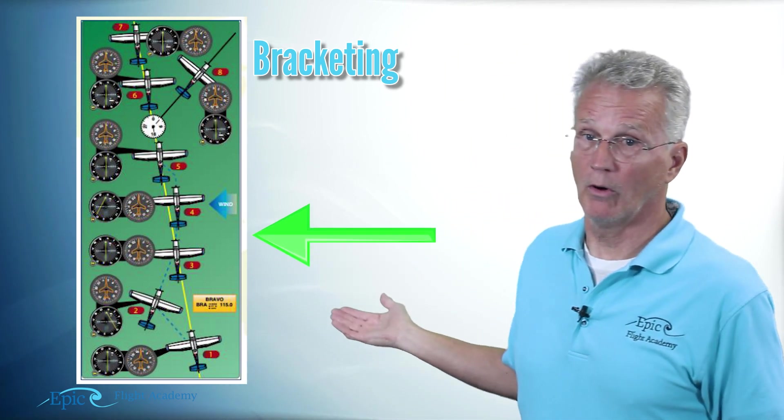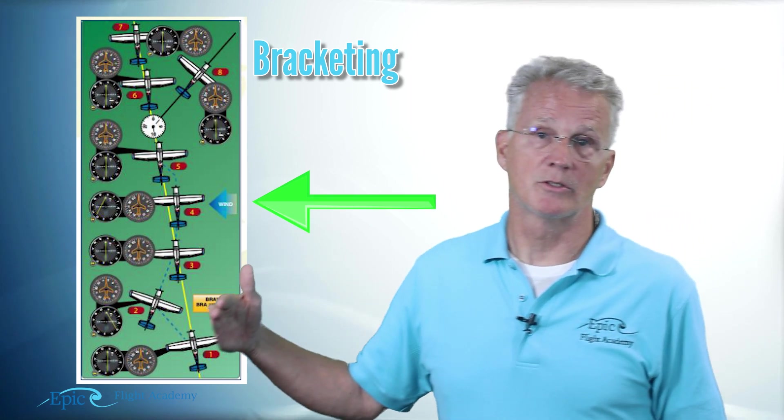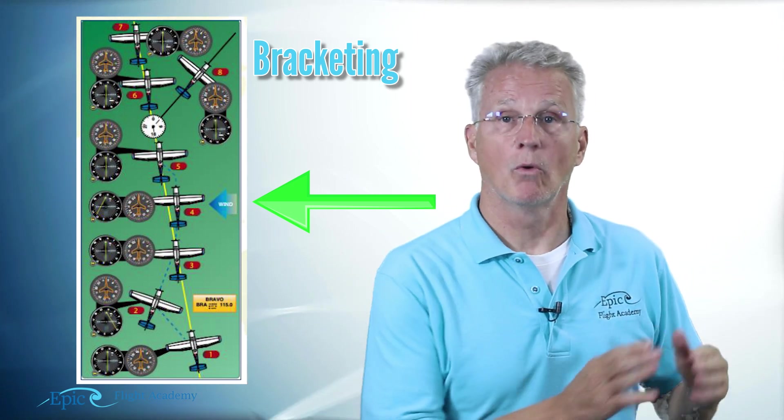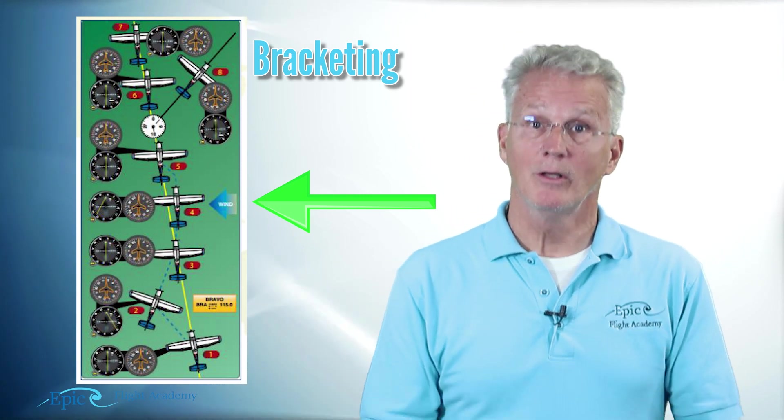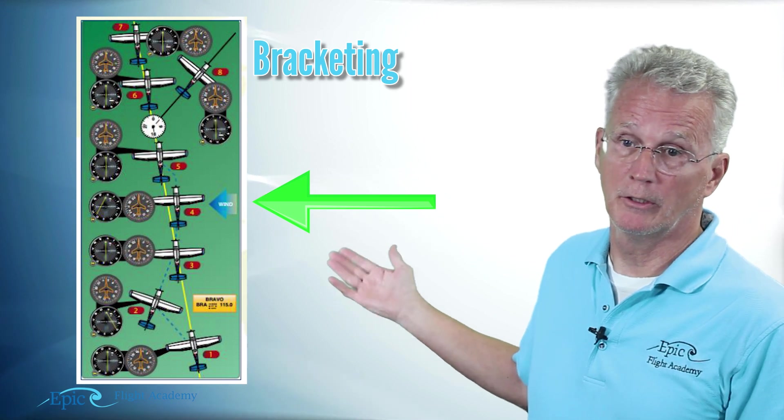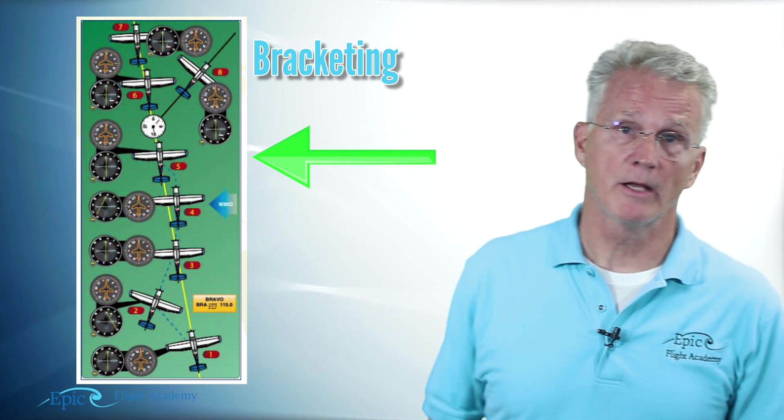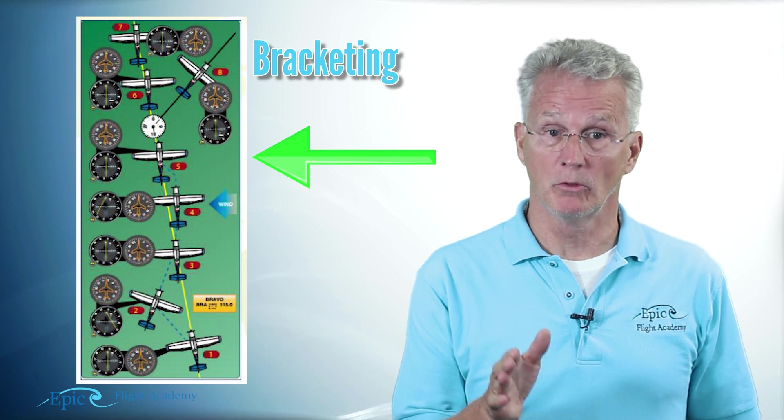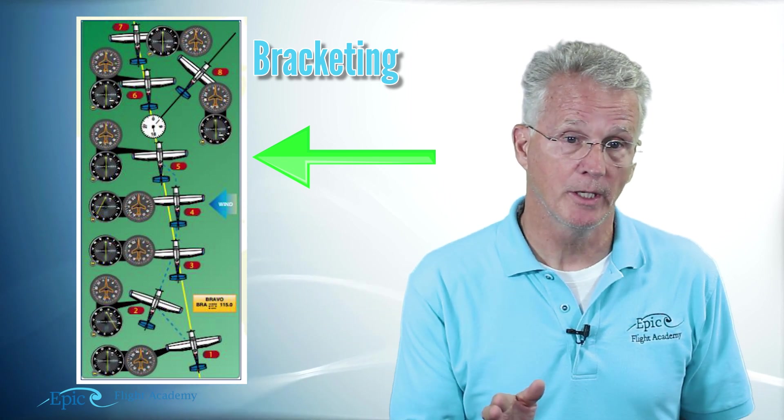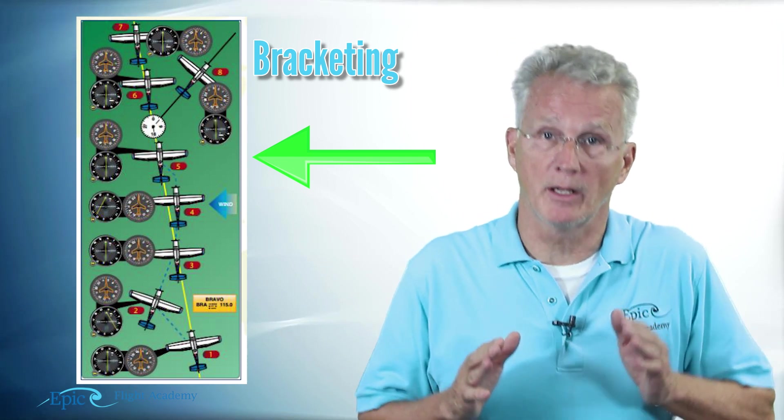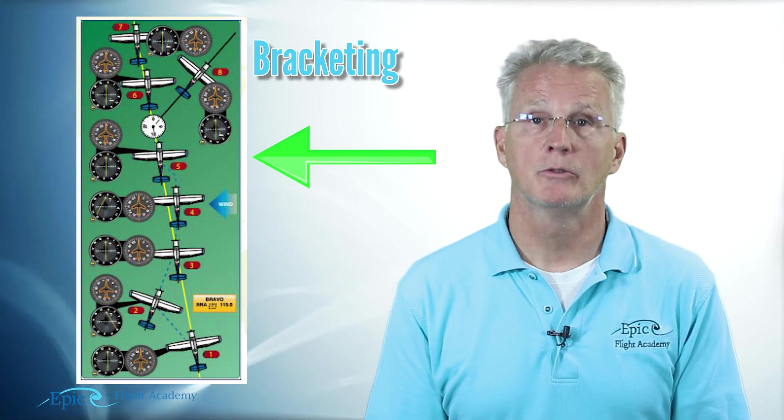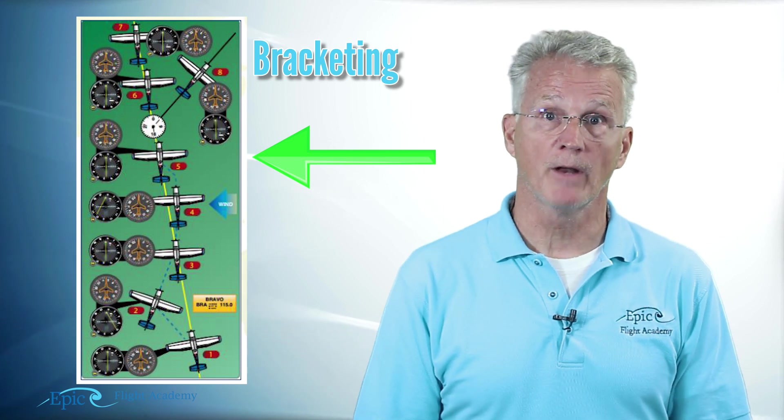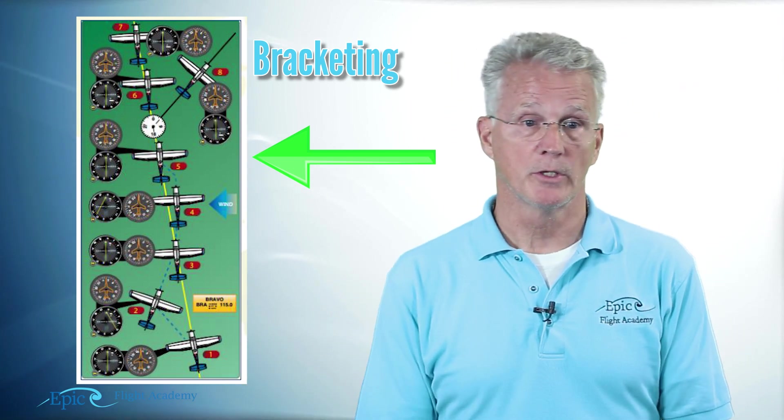In airplane number four, I am now drifting east, or my course is slightly to my west or to my left. Now let's take a look at aircraft in position number five. This aircraft shows a wind correction angle with a heading of 010, or 10 degrees. My OBS is still set to 360 TO. The aircraft is holding its course inbound to the station. That's a quick review of bracketing. Be sure to review this with your flight instructor, both in the FTD and in the airplane.